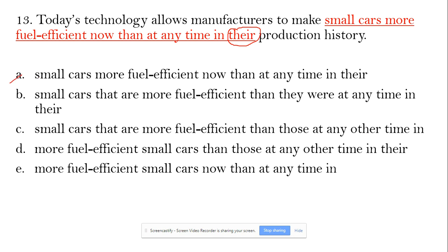A, B, and D are out because the subject is 'technology' and it uses 'their production history' — though 'manufacturers' appears, the subject mismatch makes those choices incorrect. That leaves us with C and E: 'small cars that are more fuel efficient than those at any other time.'